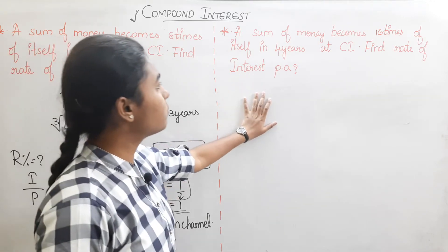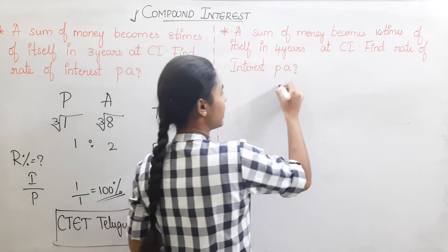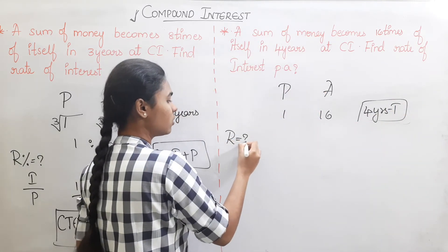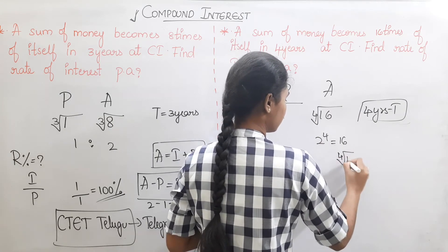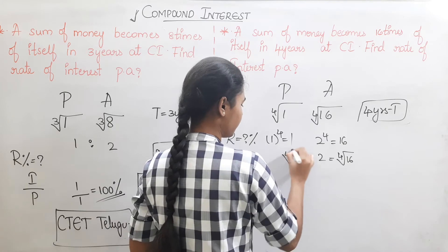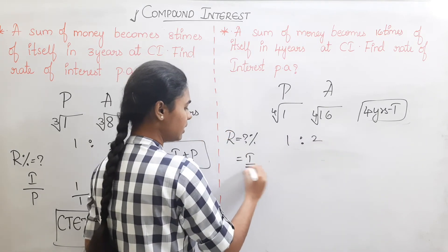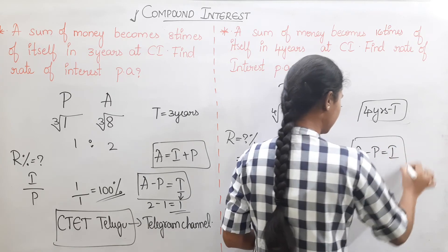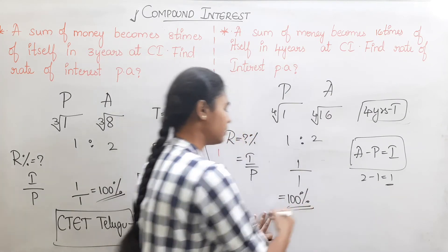Our next question: A sum of money becomes 16 times of itself in 4 years at compound interest. Find the rate of interest per annum. Time is 4 years. 2 to the power 4 equals 16, so the ratio is 1 is to 2. Amount minus principal: 2 minus 1 equals 1. Interest by principal: 1 by 1 is 100%. Very simple.